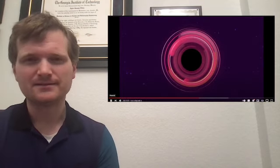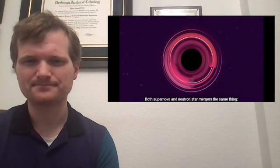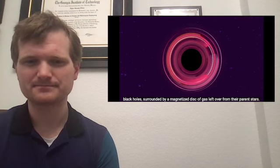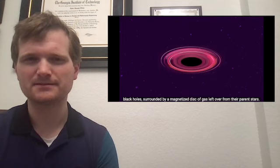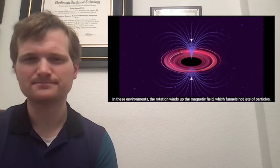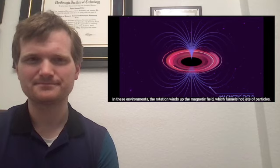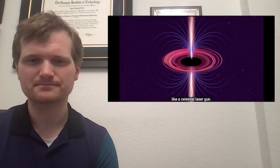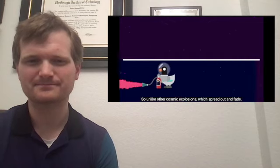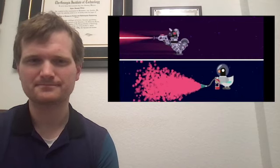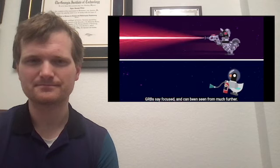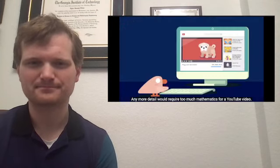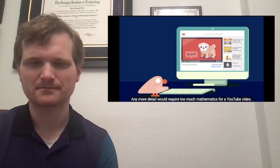Forming a black hole. Both supernova and neutron star mergers make the same thing: black holes surrounded by a magnetized disk of gas left over from their parent stars. In these environments, the rotation winds up the magnetic field, which funnels hot jets of particles traveling at nearly the speed of light. The gas in this funnel creates two tight jets of high energy gamma rays, like a celestial laser gun. So, unlike other cosmic explosions which spread out and fade, GRBs stay focused and can be seen from much further. Any more detail would require too much mathematics for a YouTube video.